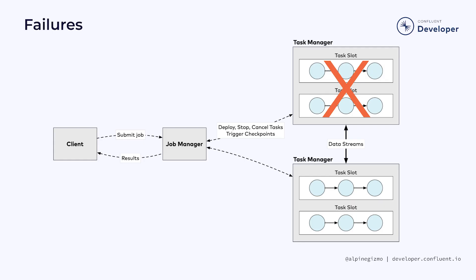It does, of course, sometimes happen that task managers fail, either because some code somewhere throws an exception or something goes wrong with the node itself. When this happens, the job manager will detect the failure and, depending on the restart strategy that has been configured, arrange for the job to be restarted.